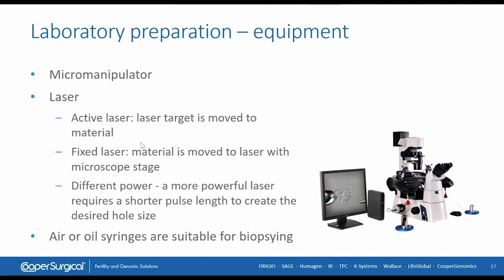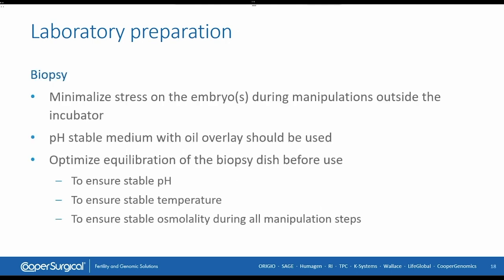You also need a micromanipulator and a laser — this could be an active laser that moves to the cellular material or zona pellucida, or a fixed laser where you move the embryo to the laser point at the microscopic stage. Different powers should be used; a more powerful laser requires a much shorter pulse length to create the desired hole size. The latest generation lasers have very low heat noise, so heat stays concentrated on the spot where you are lasering. Air or oil syringes are absolutely necessary — make sure you have high quality equipment for this work.